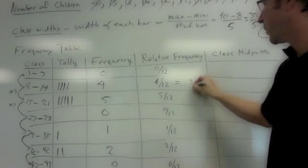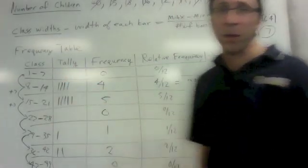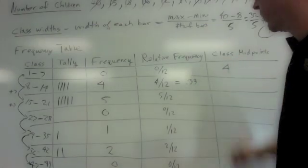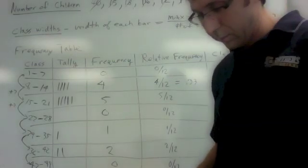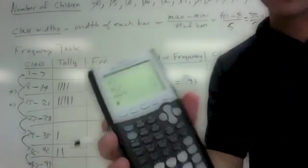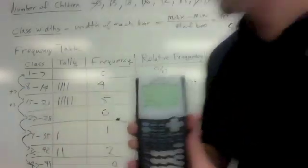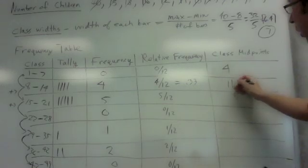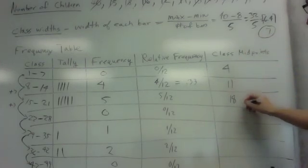For the class midpoints, class midpoints are the numbers that are halfway in between each of the classes, and you need those to complete your frequency polygon. Halfway between 1 and 7 would be 4. Halfway between 8 and 14 would be 11. I was being lazy in figuring out the midpoints—I just added the numbers that were on each side of the class and then divided by 2. You notice that these are also separated by 7, which is the class width.